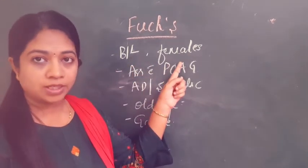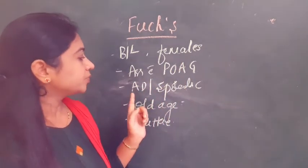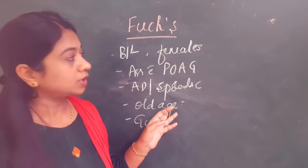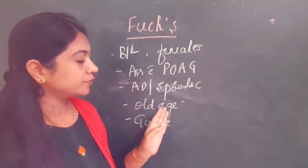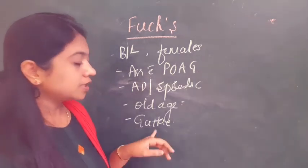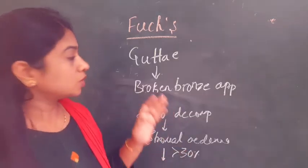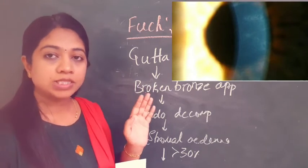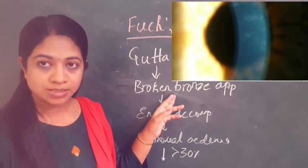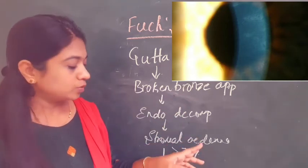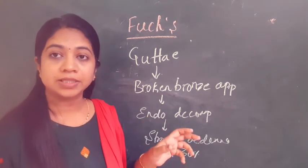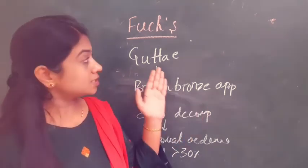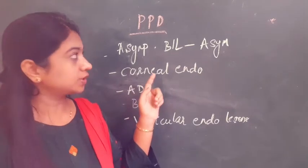Fuchs endothelial dystrophy is typically bilateral, more commonly affecting females, and more frequently associated with primary open-angle glaucoma. It can be autosomal dominant or sporadic. Unlike most corneal dystrophies, Fuchs appears in old age, though it can appear in younger age groups too. On examination you will find guttae. The disease progresses from guttae to a beaten-bronze appearance, then endothelial decompensation leads to stromal edema; when stromal edema increases by 30% it leads to epithelial edema, bullae formation, and rupture causing pain.